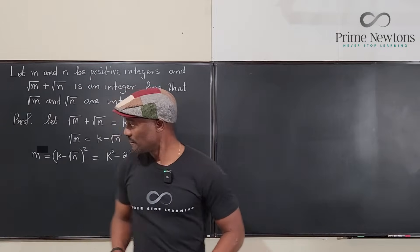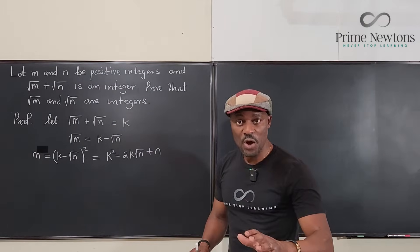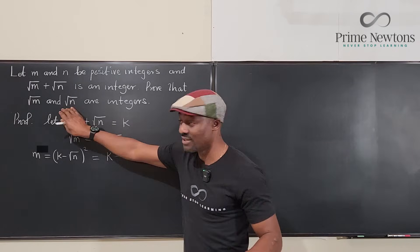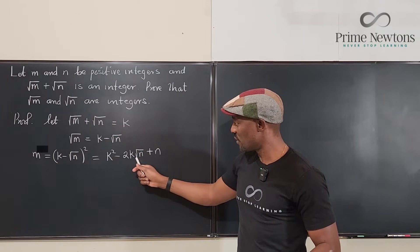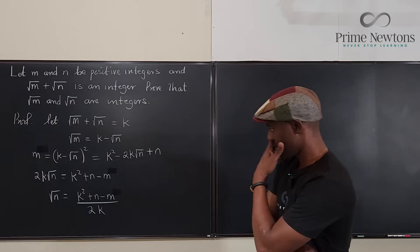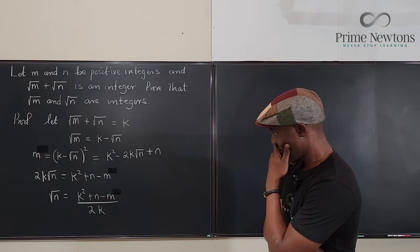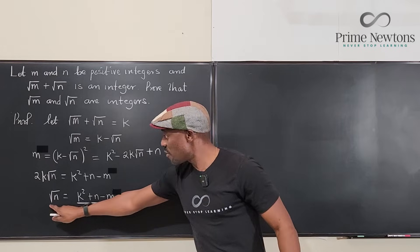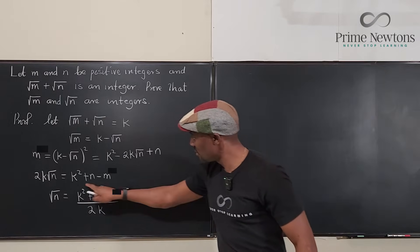So this is what we have. Now if you notice the only radical that we have showing up, because that's the concern, is this guy. So we can solve for √n by moving this to this side. The square root of n is a rational number.